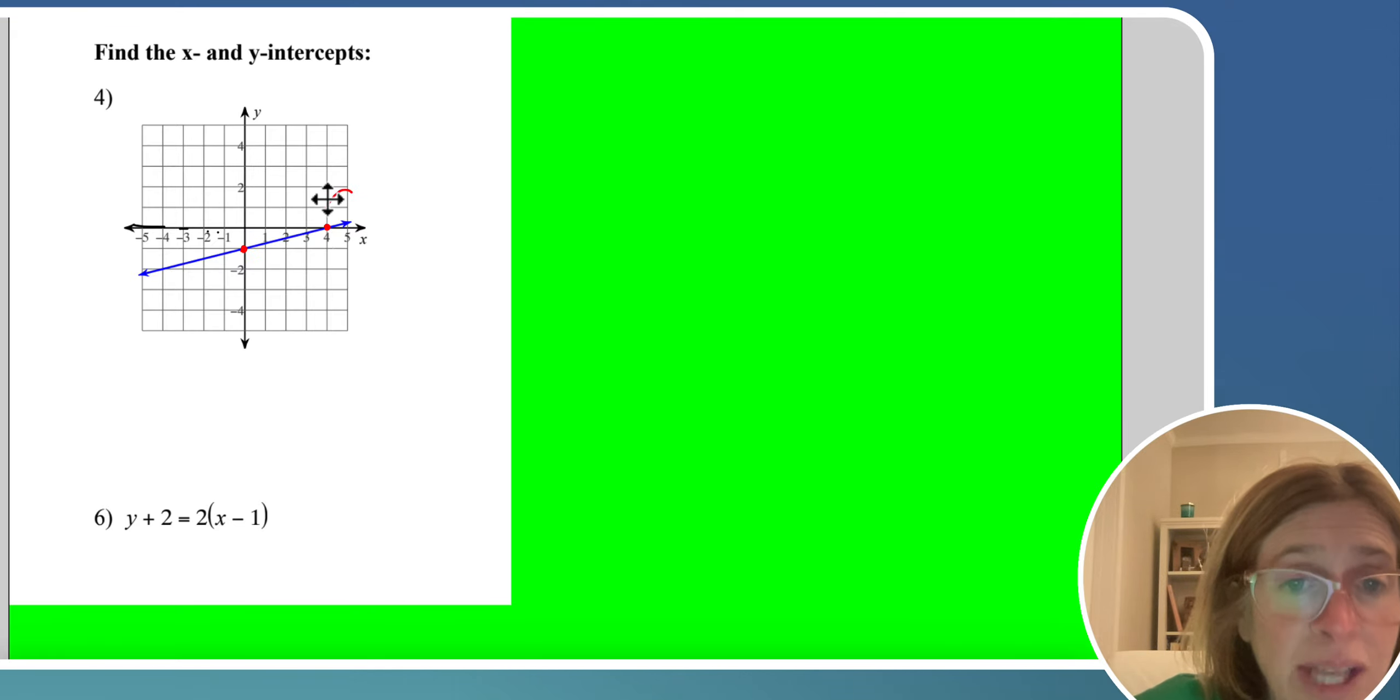So the x intercept right here is the ordered pair 4, 0. And the y intercept right here is 0, negative 1.